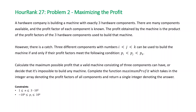Complete the function maximum_profit which takes in the integer array denoting the profit factors of all components and returns a single integer denoting the answer. The size of our array is going to be no greater than 3×10^5, and the values of our profit factors are going to be between negative 10^6 and 10^6.